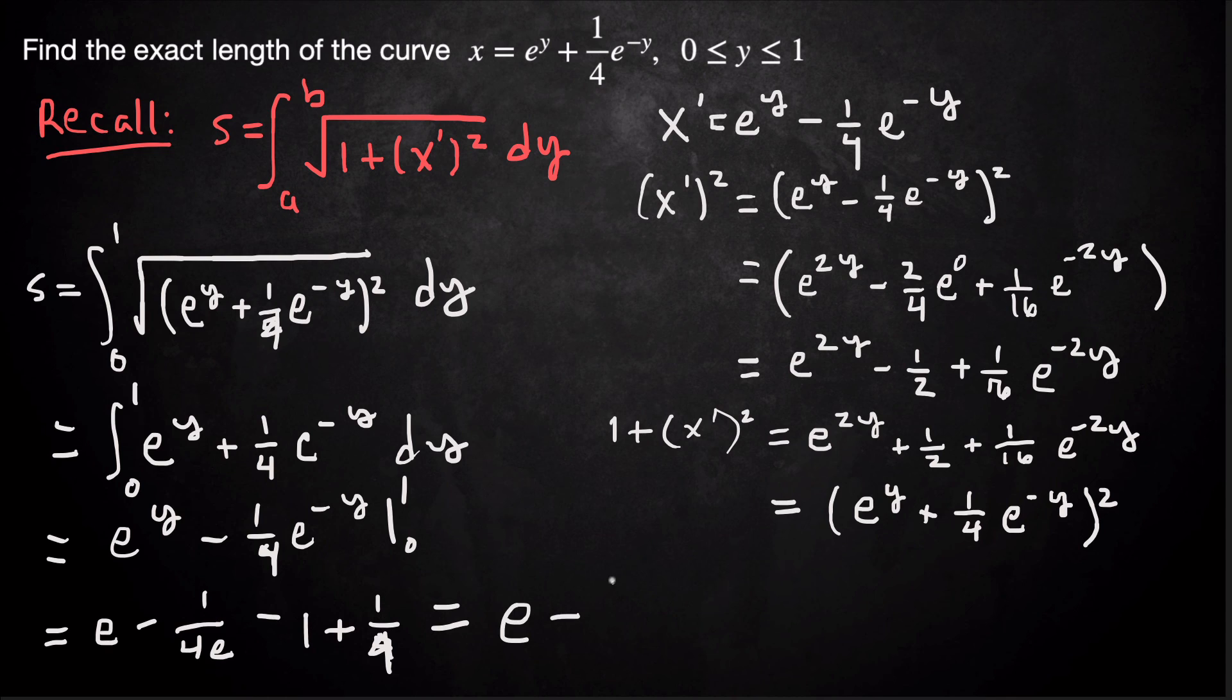So this is e - (1/4)e^(-1) - 3/4. Thank you.